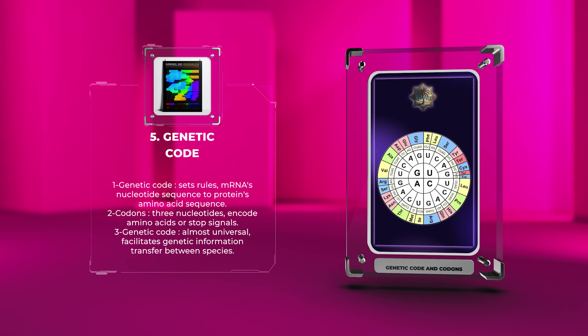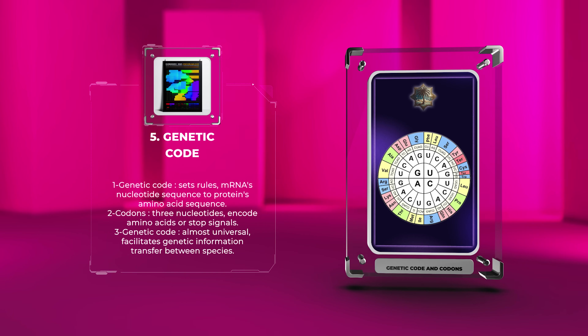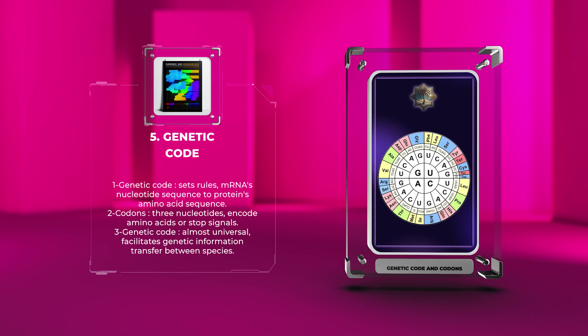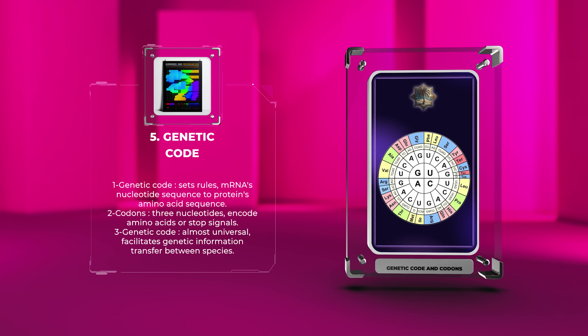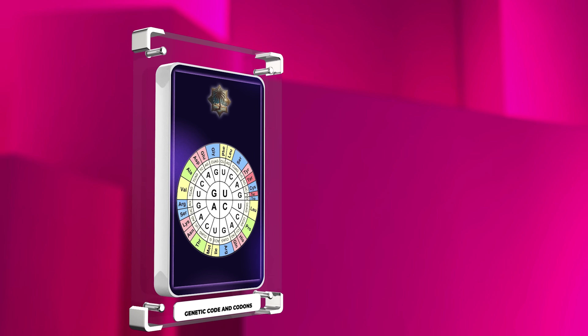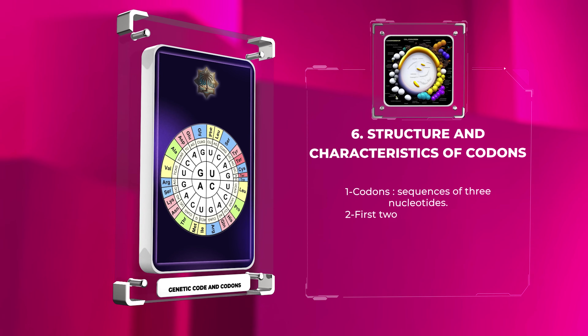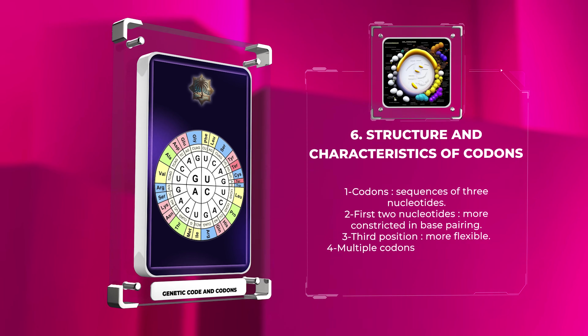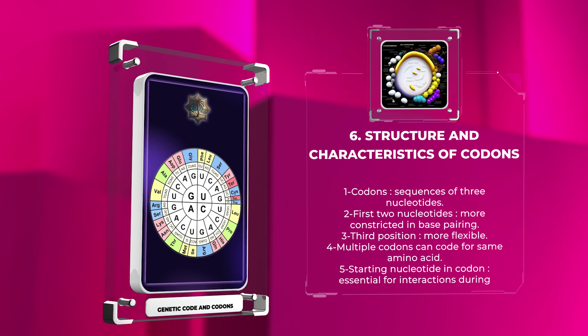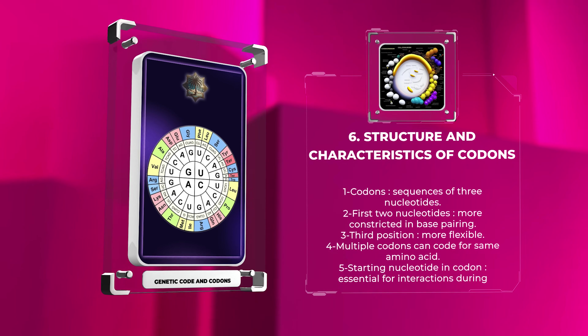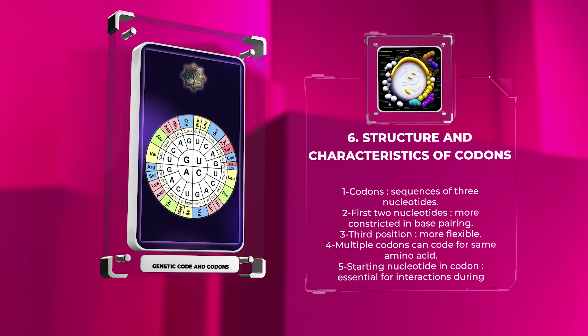The genetic code is almost universal, facilitating genetic information transfer between species. Overall, codons are the sequences of three nucleotides that dictate which amino acids or stop signals are incorporated into proteins.